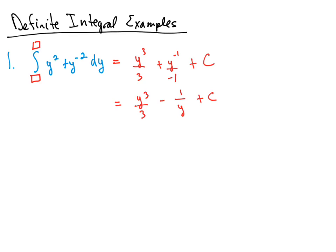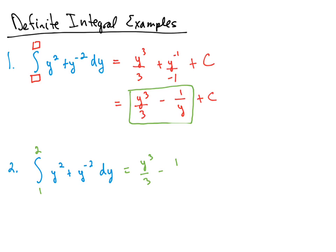So I just wanted to have a quick reminder on what an indefinite integral would look like here. Now this second example is the same integrand, but now we have limits of integration. So we're integrating this function from 1 to 2. We're going to end up with the same expression: y cubed divided by 3 minus 1 over y. We don't need to write the plus c because it would just eventually cancel out. So we're going to evaluate this from 1 to 2.